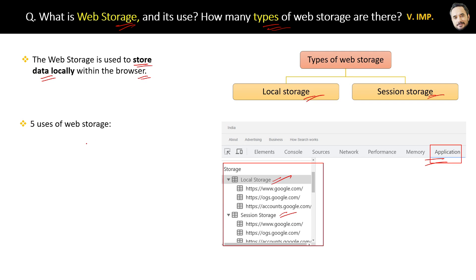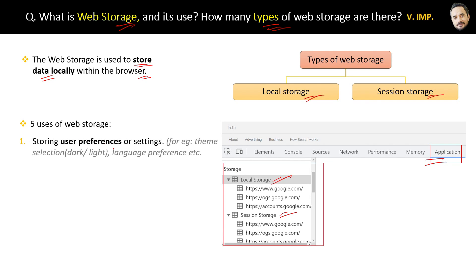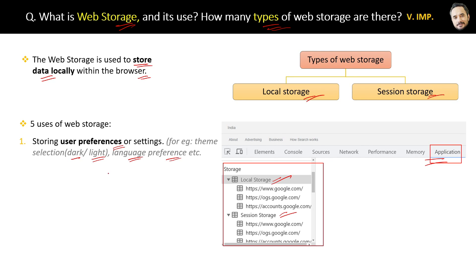There are five typical uses of web storage. The first is storing user preferences or settings — for example, theme selection like dark theme or light theme, or the language preference of the user like English or Hindi. That setting will be stored in the local browser web storage.